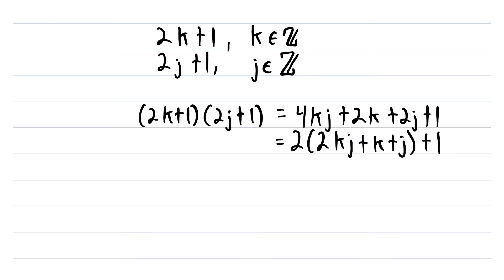And thus, we now have an expression of the form 2 times an integer plus 1. And that's an odd number.